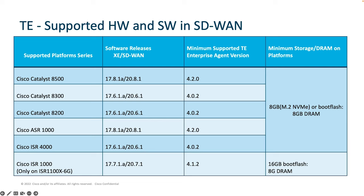In the fourth column, I have provided the DRAM and storage requirement for successful ThousandEyes deployment. For most devices, ThousandEyes deployment is supported with 8GB DRAM and 8GB storage in either NVMe or boot flash form factor. On the ISR1000 platform side, only the ISR1100X-6G platform supports ThousandEyes today and it requires 16GB of boot flash storage.